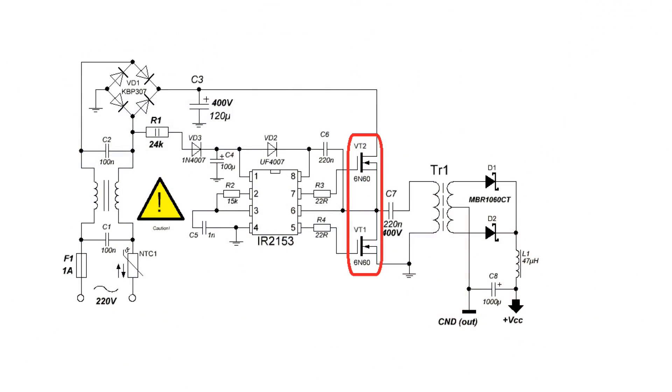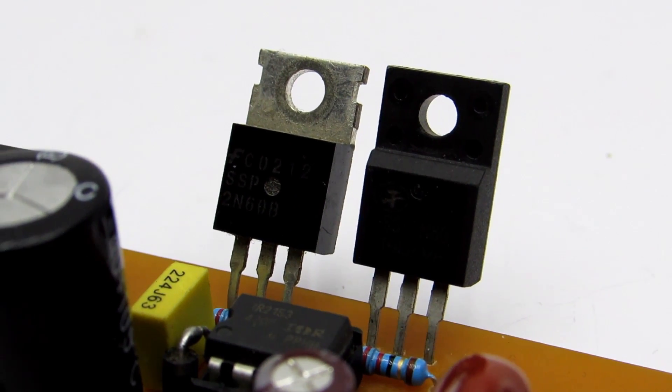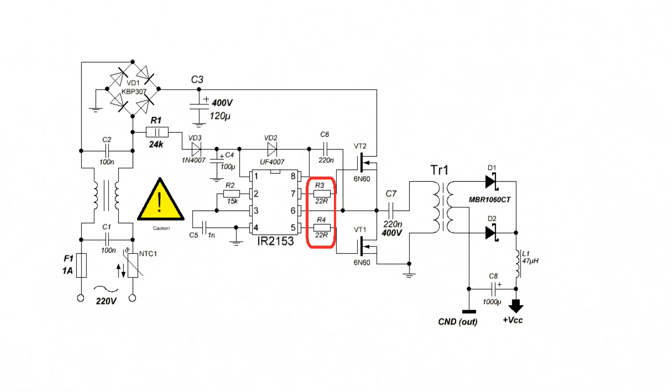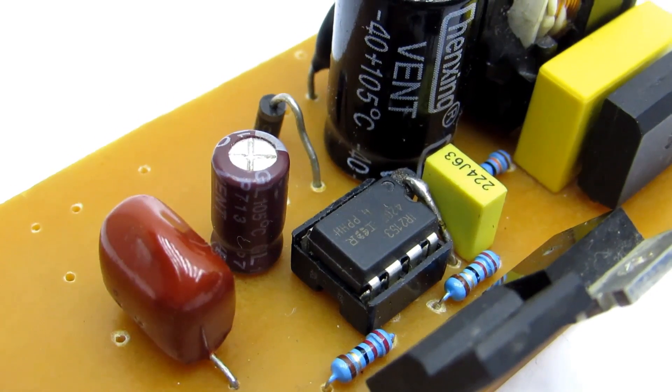FETs are any N-channel with a voltage not less than 400 volts and a current of at least 4 amperes. It can be less, as I have, but the reserve of current never hurts. FET gate limiting resistors may be from 10 to 33 ohms, with power of 0.25 watts.